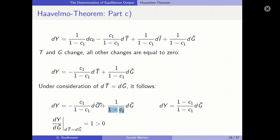We combine the positive 1 and the negative minus c1, and we get dY is equal to (1 minus c1) over (1 minus c1) times dG. Putting dG on the other side of the equation, the (1 minus c1) cancels out, giving us dY over dG equal to 1 — derived under the assumption that the increase in government spending is financed by an increase in taxes. Hence we have derived the so-called Haavelmo theorem: an increase in government spending financed by taxes has a positive effect on GDP, with a balanced budget multiplier of 1.